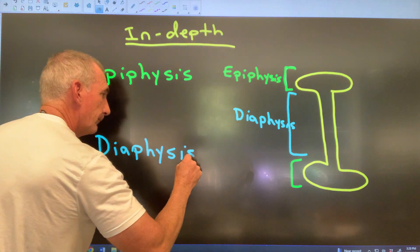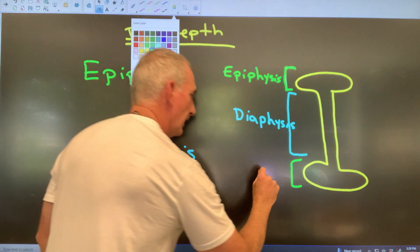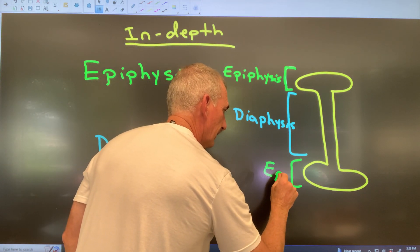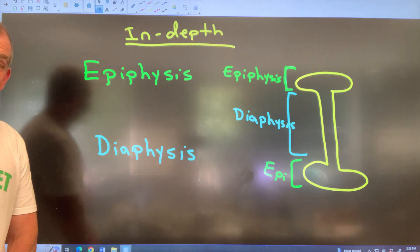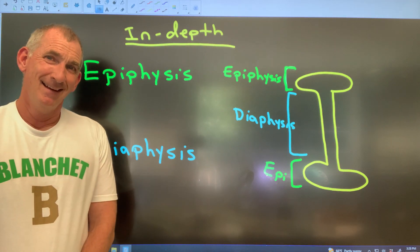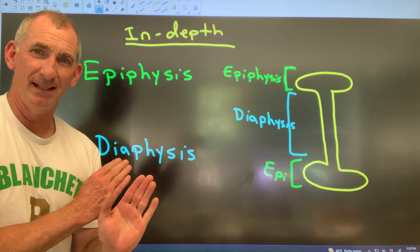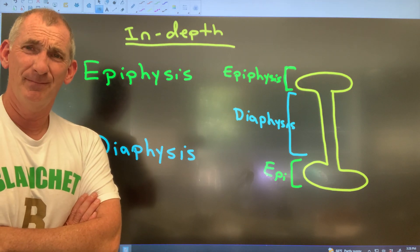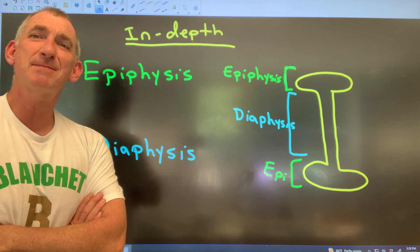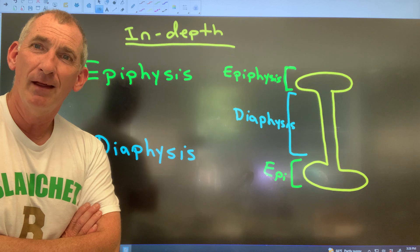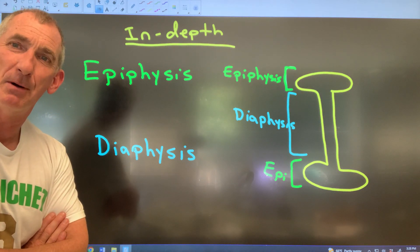The ends of a long bone are called the epiphyses. Each one of these parts is different — the epiphyses are made up of spongy bone, whereas the diaphysis is made up of compact bone.